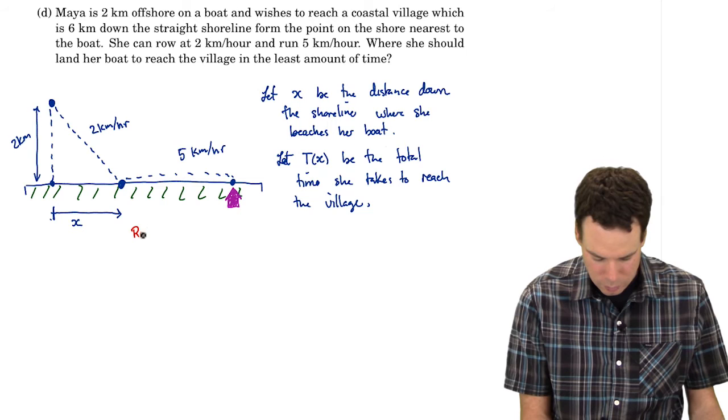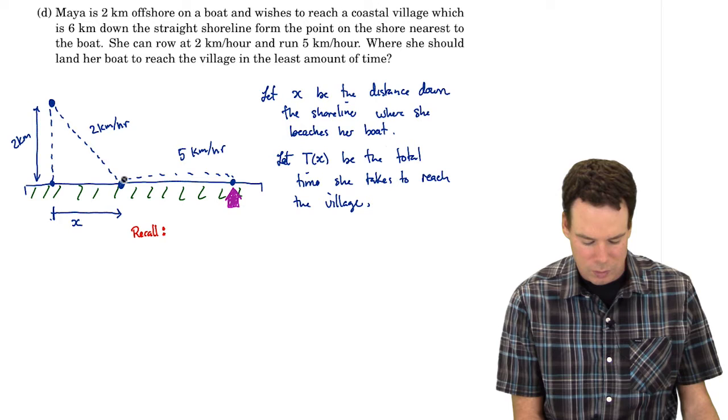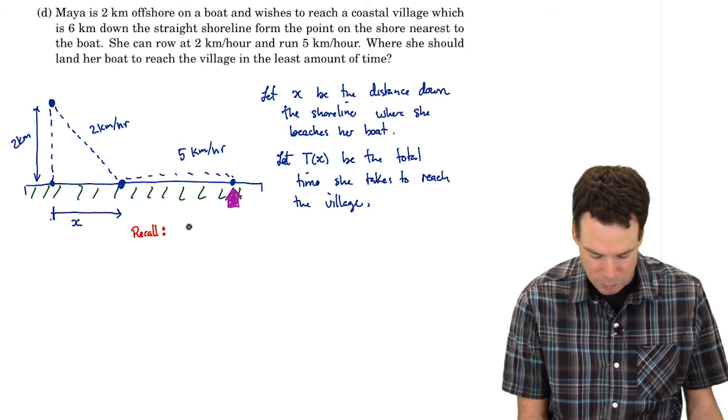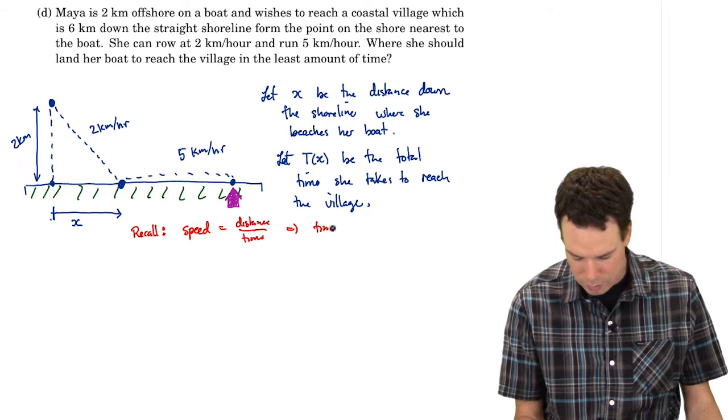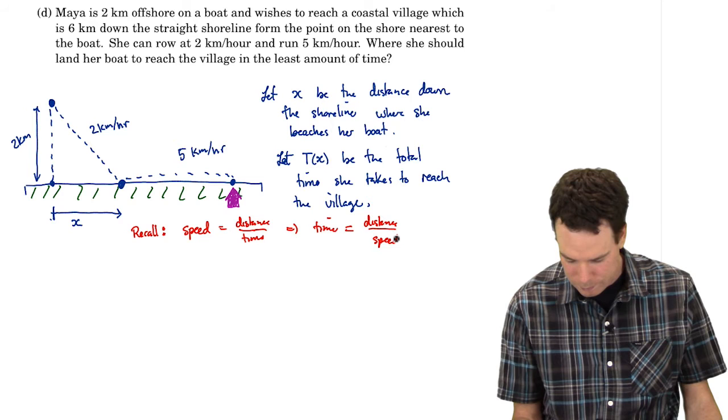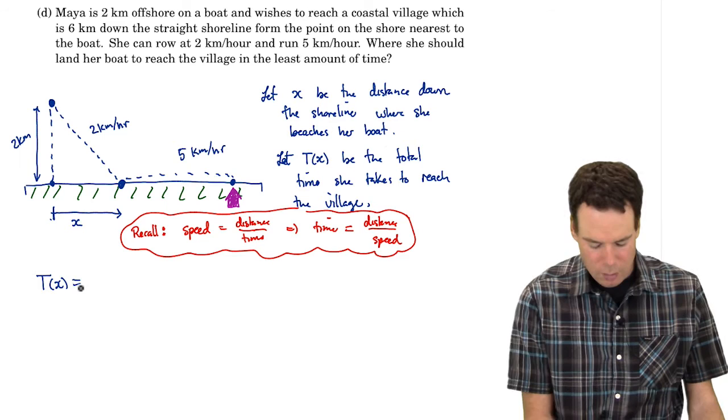So let's just make one comment here. We need to recall something. We're given a speed. We can work out a distance she travels for which she's traveling that speed along that distance. We need to know how to get time from that. So speed is distance traveled divided by time. So that means that our time is our distance divided by speed. So that's how we're going to get our time function given the fact that we know distances and speed.